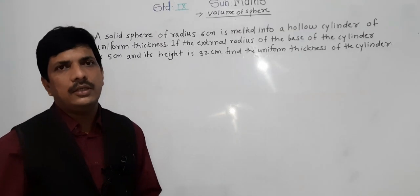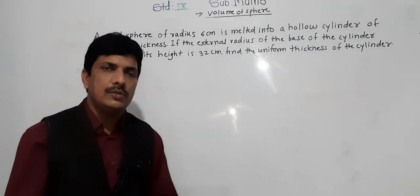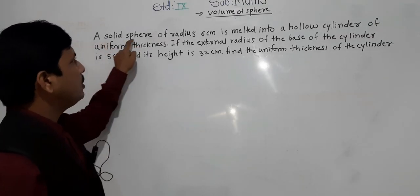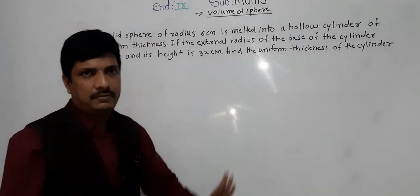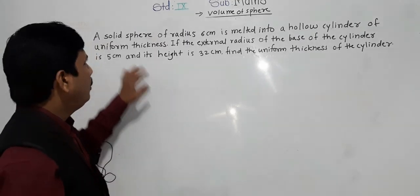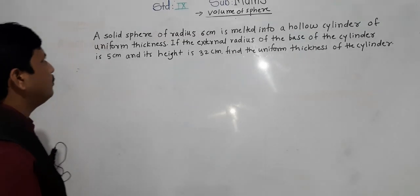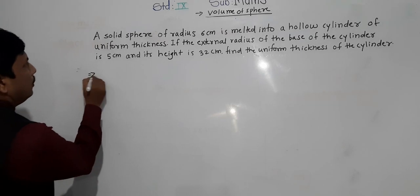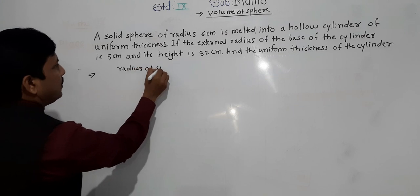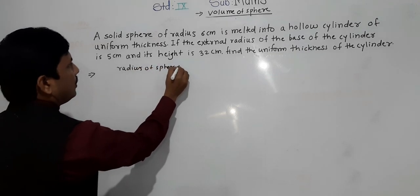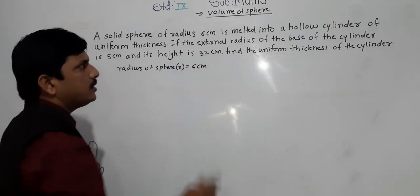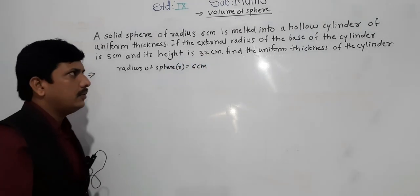Thickness means external radius minus internal radius — that equals thickness. A solid sphere of radius 6 centimeter is melted, so definitely we need to find out the volume of the sphere. The radius of the sphere R equals 6 centimeter.